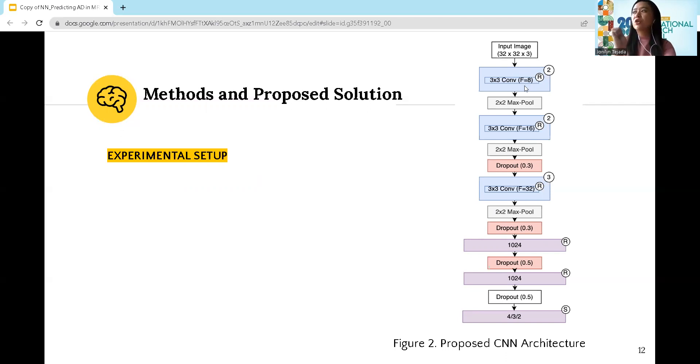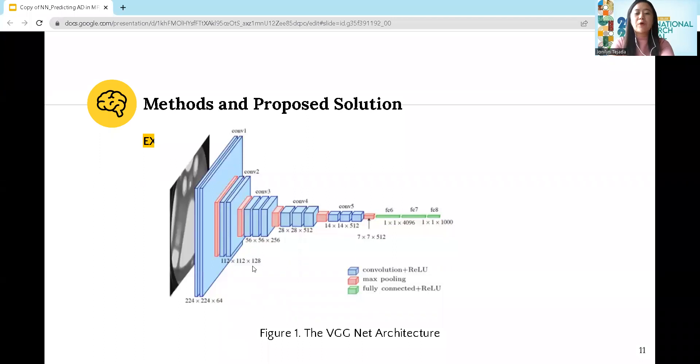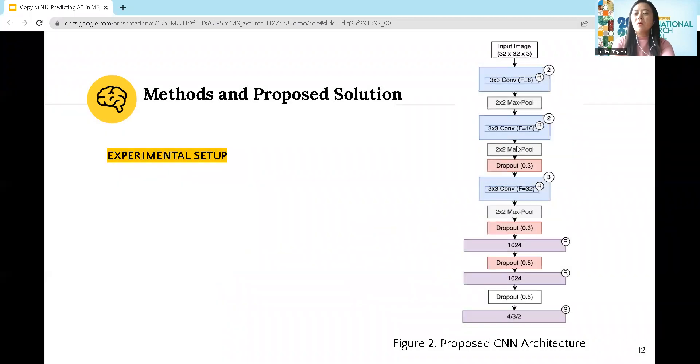I also employed smaller filter sizes in each convolution layer, but the filters are still in increasing size. I deployed smaller filter sizes of 8, 16, 32, compared to the original VGG architecture of 64, 128, 256, and two layers of 512.